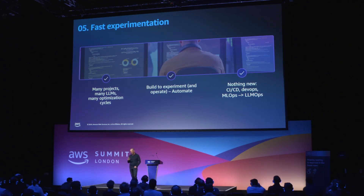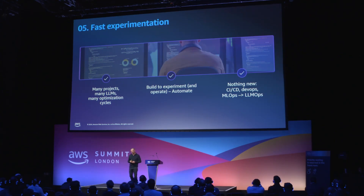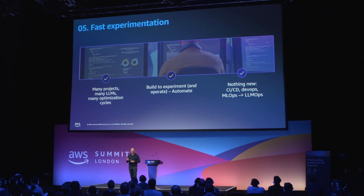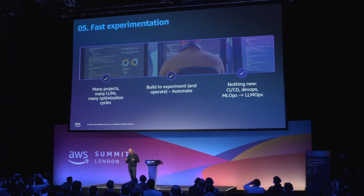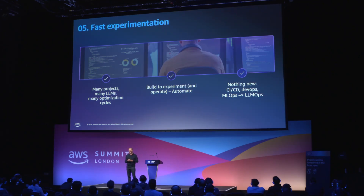You're going to have many projects, many LLMs, and you're going to build to experiment. This experimental approach is really key. And recognise that nothing has really changed — you still use CI/CD and DevOps, we may call it LLMOps now, and there will be some subtleties in the processes. But actually you're evolving in terms of how you run your experimentation. This is incremental — you should be building on your best practices and all of the processes that you have in place today.